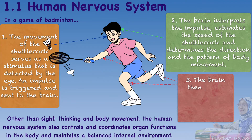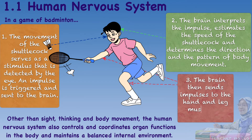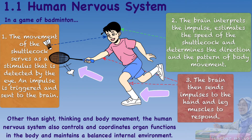What do you think is the next step? The brain then sends impulses to the hand and leg muscles to respond. This will cause the leg to step forward and the hand to move the racket towards the direction of the shuttlecock.